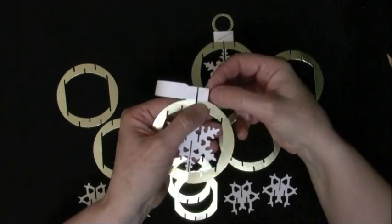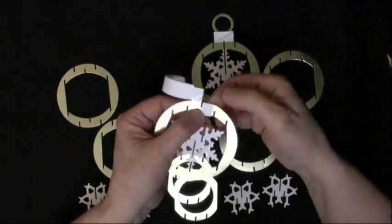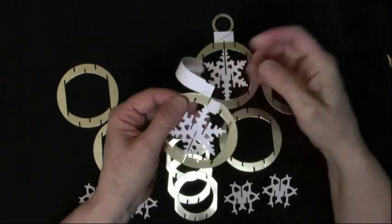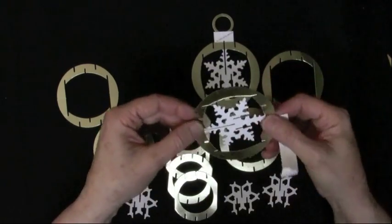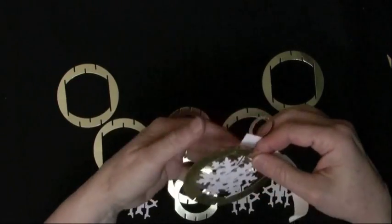Then take this little piece right here. It's got a little bit of a score line and just fold that down. Now take this and turn it over and take this piece and turn it over.